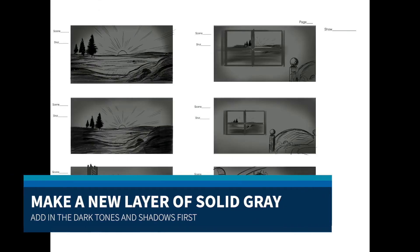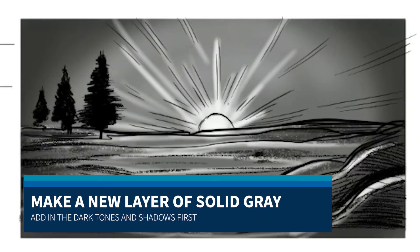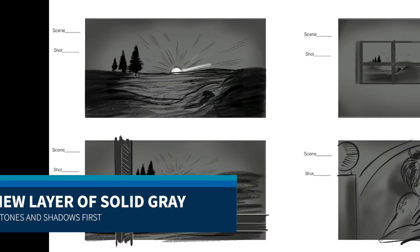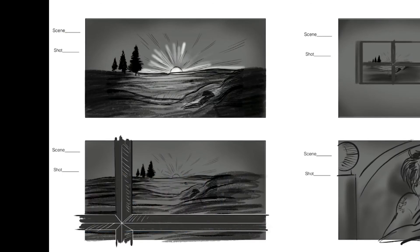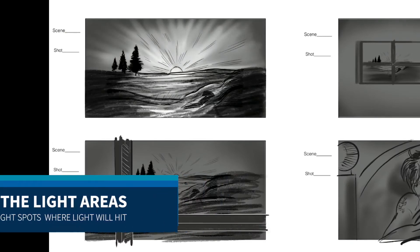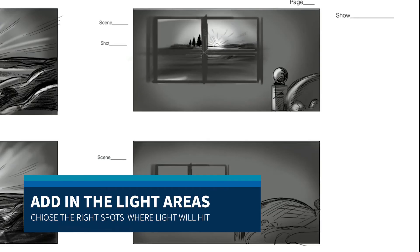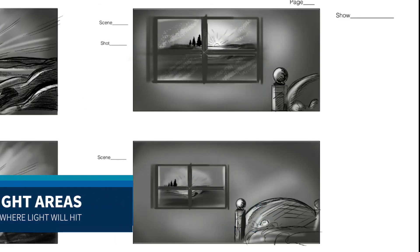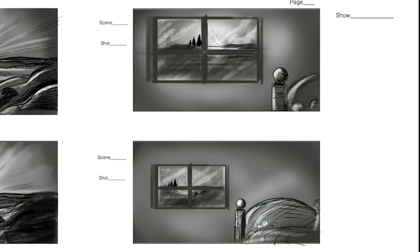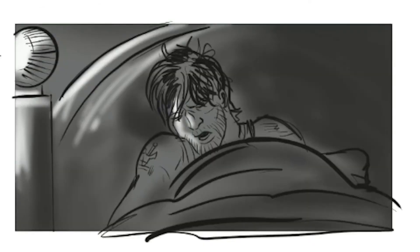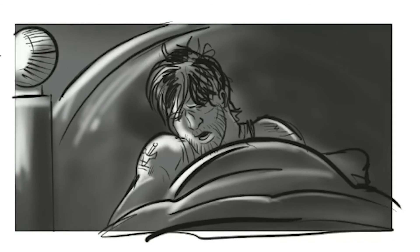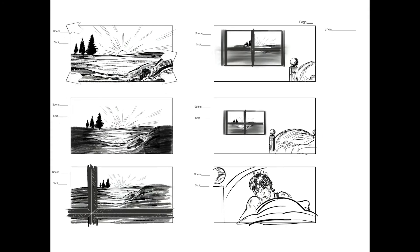Now make a layer of just solid medium grays and base your shadows and light on that layer alone. Use a smudge tool to blend in those areas as well. Make sure that you have the light land on the right part of the panel and the frame.